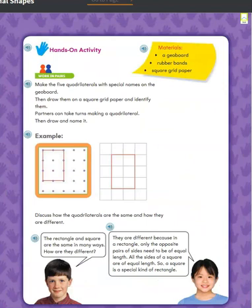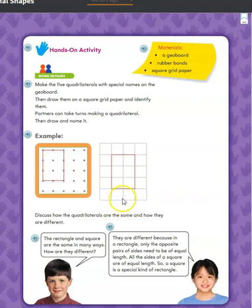Just remember, a quadrilateral has four sides. There are some really fun activities — if we were in the classroom we'd have our geo boards out exploring shapes. Just do what you can at home: if you have dot paper, craft sticks, a geo board, or rubber bands, there's all kinds of things you could do to experiment with different shapes.